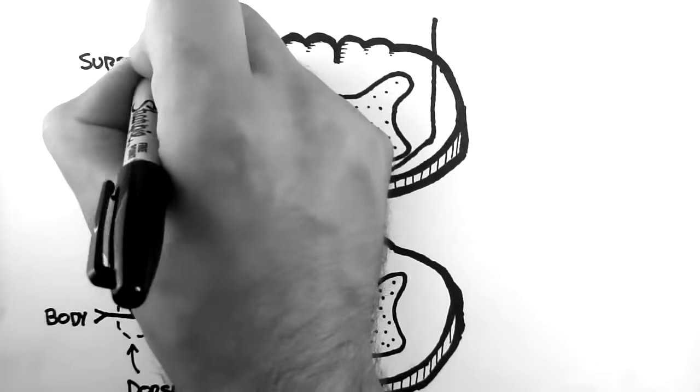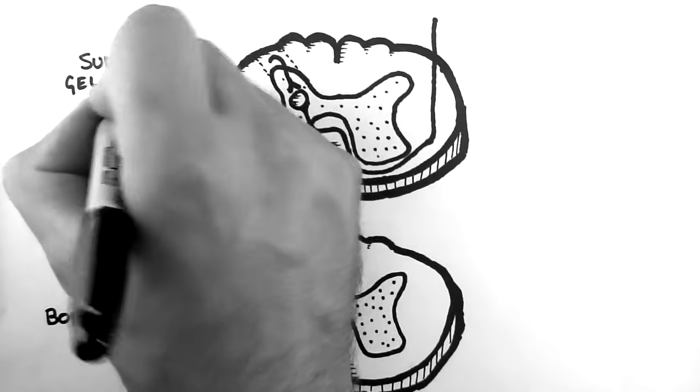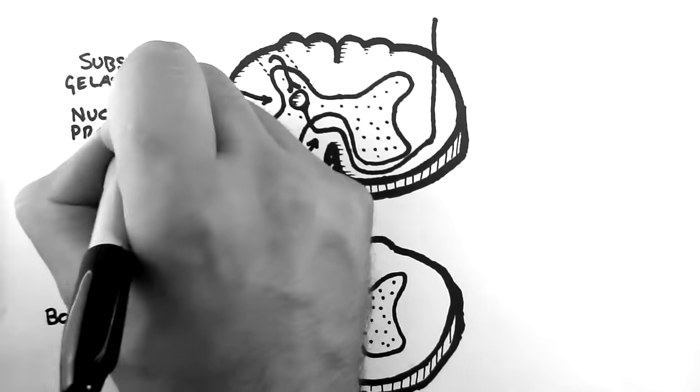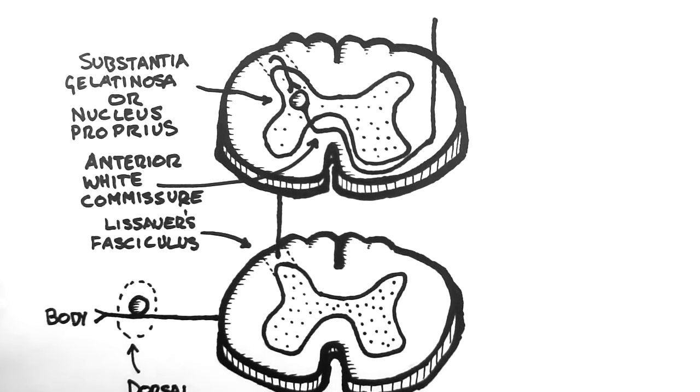These neurons here are located within the substantia gelatinosa, or the nucleus proprius, both of which are collections of cell bodies within the dorsal horn.